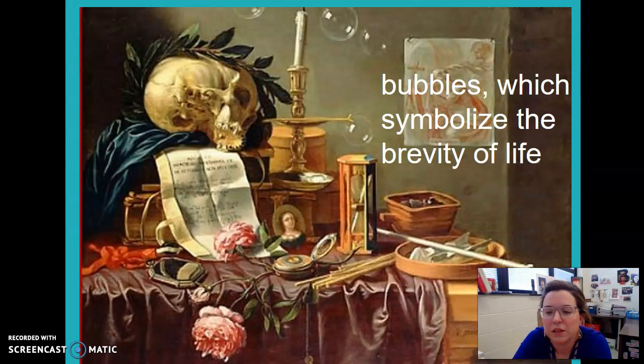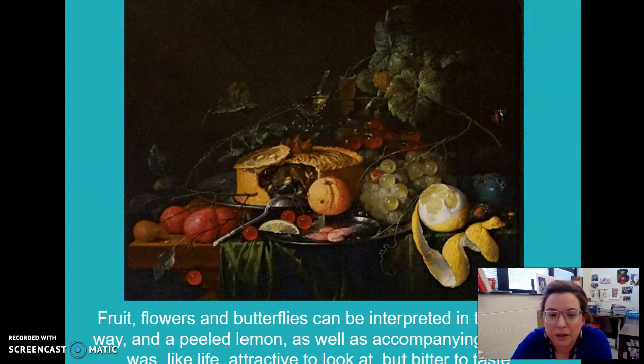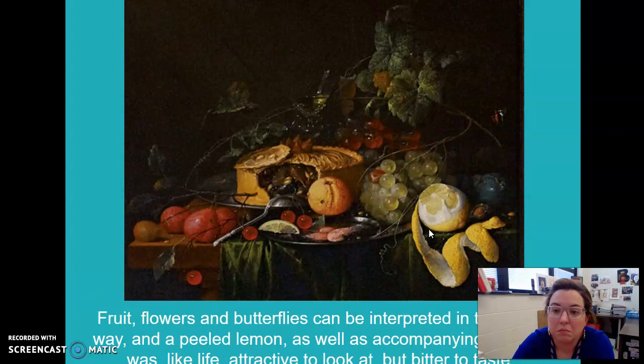Bubbles are in a lot of Vanitas, which symbolize the brevity of life — the quickness and how fleeting a life can be. So bubbles don't last very long, similar to life. An hourglass symbolizes time passing. Fruits, vegetables, sometimes there are butterflies in a still life, and they can be interpreted the same way. And a peeled lemon can often symbolize the bitterness of life.